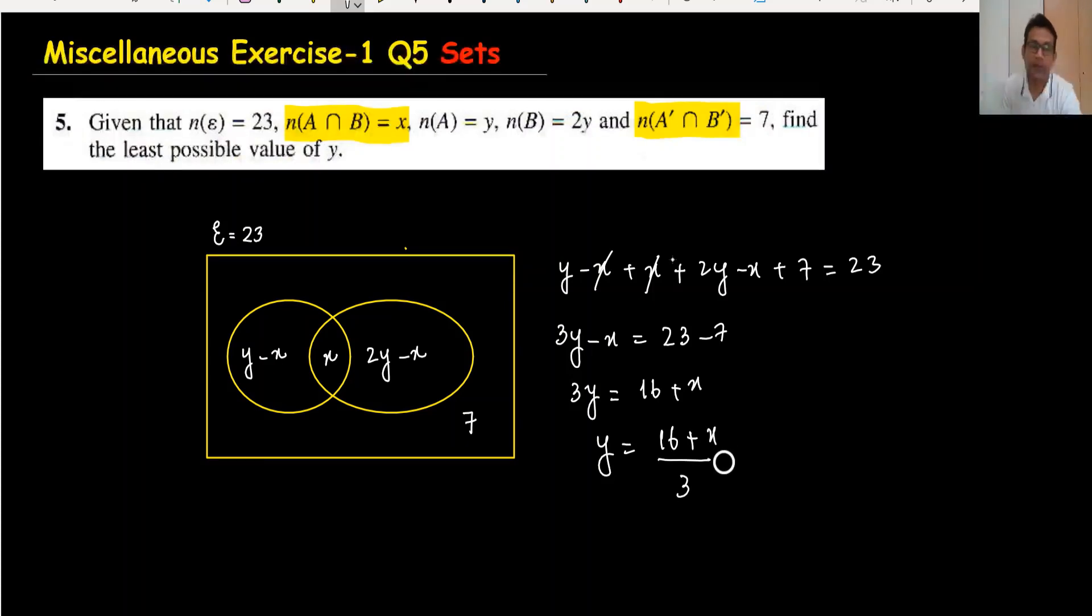Now I need to find the possible value of x to get the minimum value of y, because we need the least possible value.